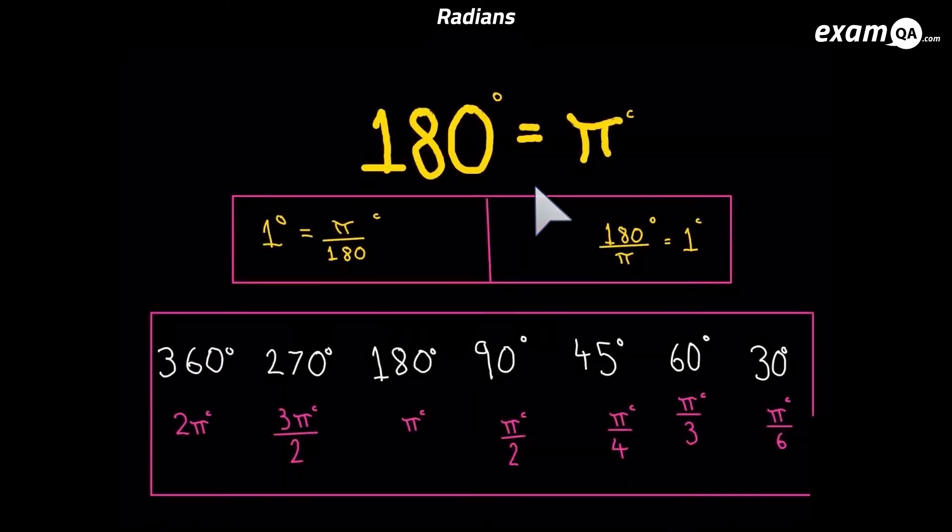Now let's talk about converting from degrees to radians. You need to be really good at doing that because from now on, we're going to be working in radians. What you need to know is 180 degrees converts to exactly pi radians. From that, we can work out what one degree is. Divide both sides by 180, and you get one degree is pi over 180 radians.